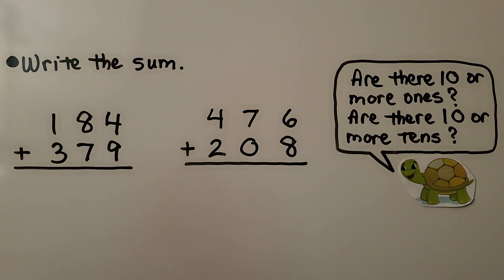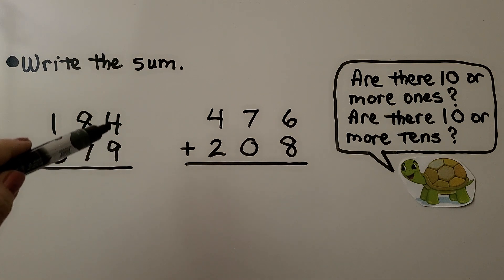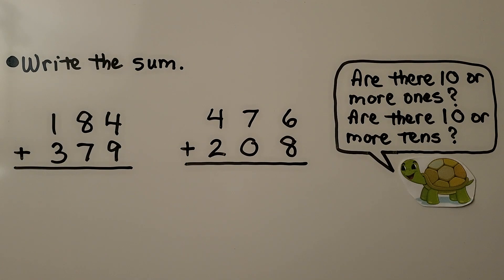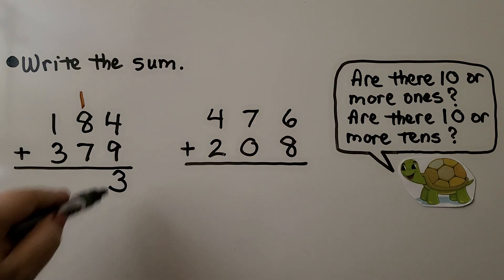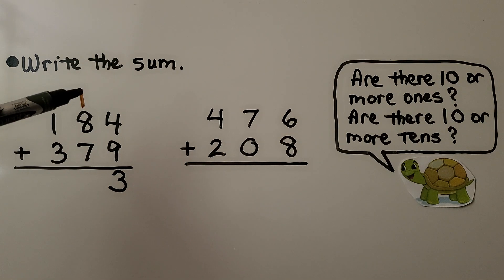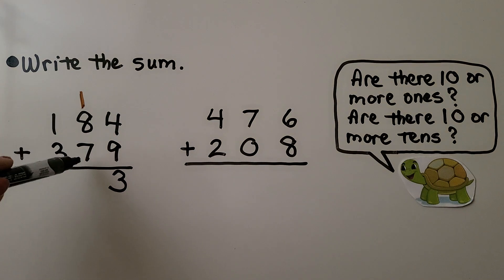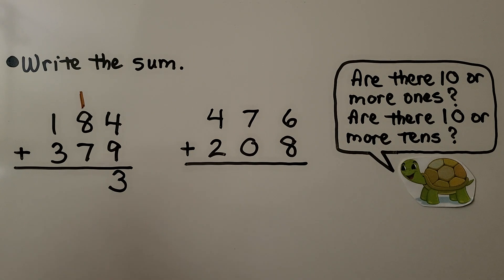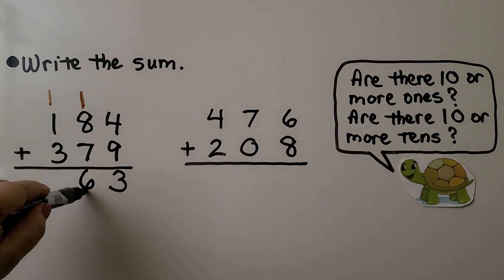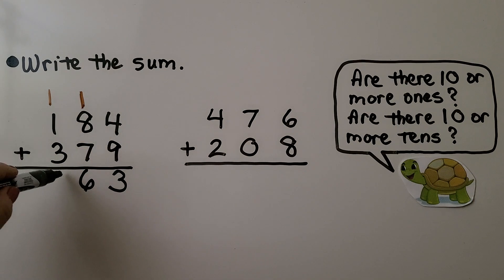Now we need to find the sum for two problems. We start with the ones place: nine ones and four ones is thirteen ones. Are there ten or more ones? Yes, we have thirteen. So we regroup a ten to the tens place and write the three in the ones place. Now we add eight plus seven plus one. If I put the one with the seven, I'll have a doubles: eight plus eight is sixteen. Are there ten or more tens? Yes. So we put ten tens in the hundreds place as a hundred and write a six. Now we add the hundreds: three, four, five — five hundred sixty-three.